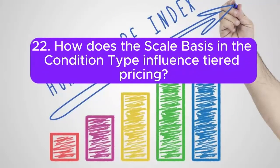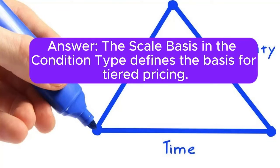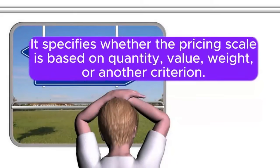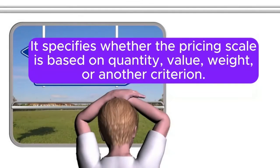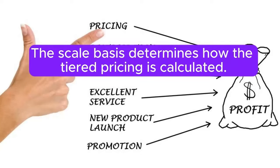Question 22: How does the scale basis in the condition type influence tiered pricing? Answer: The scale basis in the condition type defines the basis for tiered pricing. It specifies whether the pricing scale is based on quantity, value, weight, or another criterion. The scale basis determines how the tiered pricing is calculated.